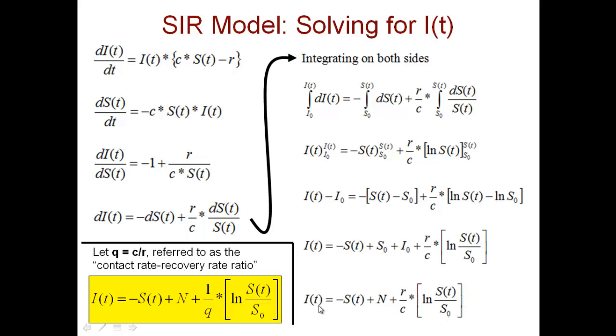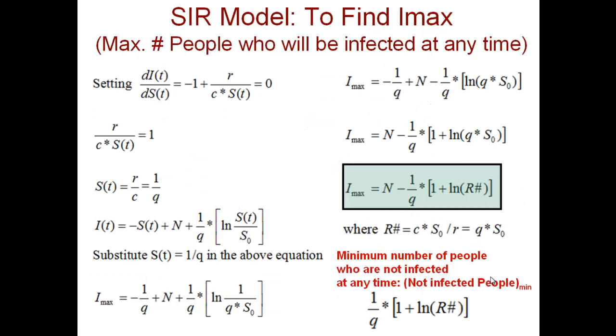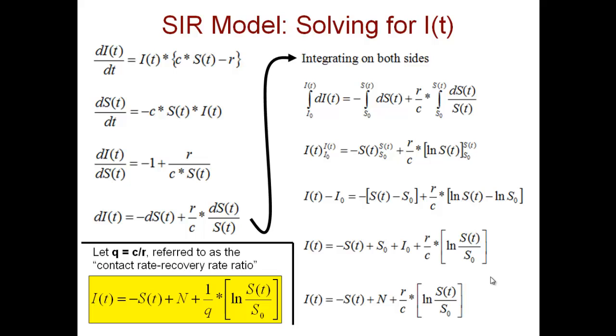So now if you see this equation, all variables are constant other than S(t). That means we have shown how I(t) is relating to S(t) along with these parameters.